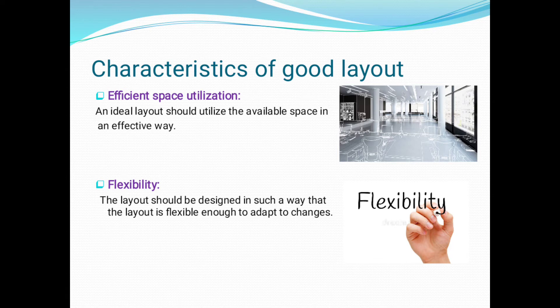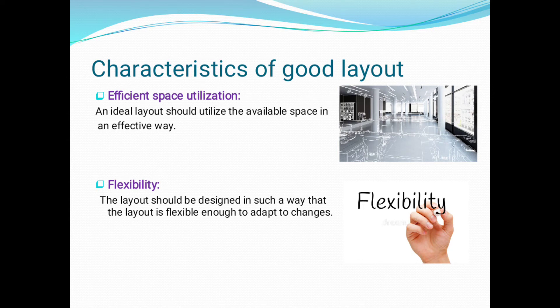It should ensure minimum movement of men and machines. Smooth operations of the manufacturing process should be facilitated and work-in-progress inventory reduced. The layout with the following characteristics would be able to fulfill the above-mentioned requirements. The first characteristic is efficient space utilization. An ideal layout should utilize the available space in an effective way. Wastage of space should be avoided at all costs.